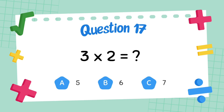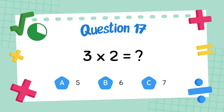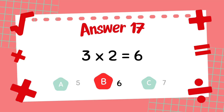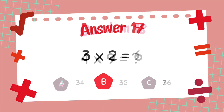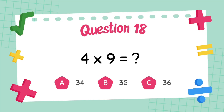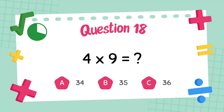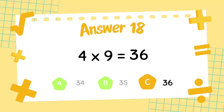What is three multiply two? The answer is six. What is four multiply nine? The answer is thirty-six.